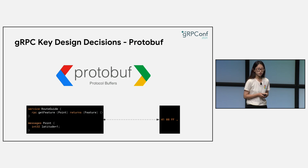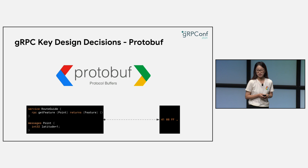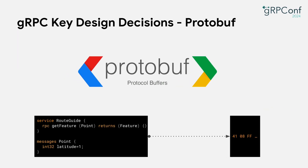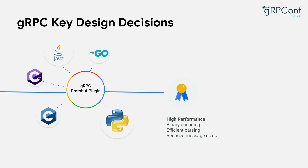gRPC's popularity stands on a few key fundamental design decisions that bring in cutting-edge technologies. One is that gRPC uses protobuf for data serialization and generating interfaces. Protobuf is an open-source, language-agnostic framework. All of the gRPC language implementations use a protobuf plugin to generate interfaces, so these languages can talk with each other over various devices and platforms. Protobuf uses binary encoding — it is very efficient in parsing and reduces message sizes, all of which make gRPC high performance and highly flexible compared with other RPC frameworks.